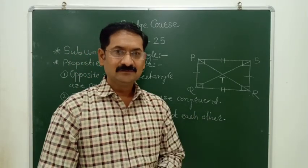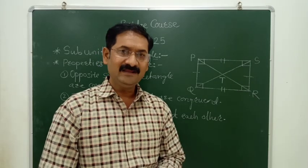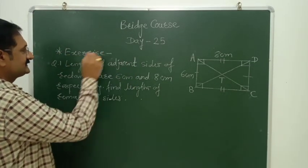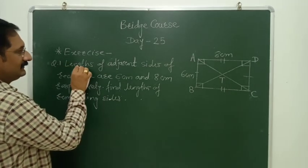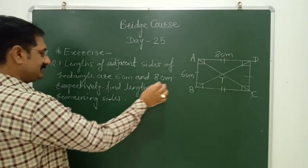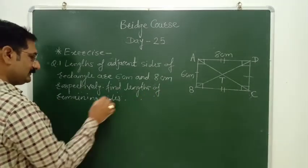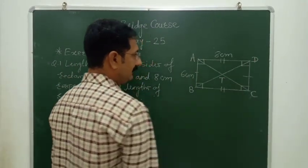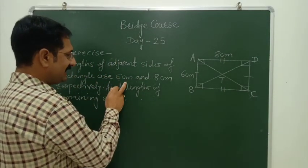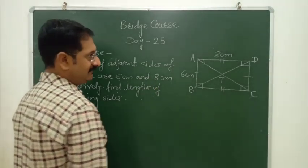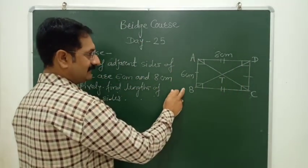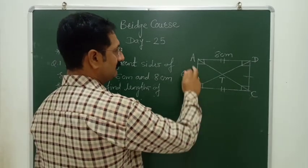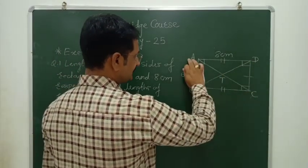So let's concentrate on the topic exercise of activity day 25. AB and AD are the adjacent sides of rectangle. One side is 6 cm, the other side is 8 cm. We have to concentrate on the remaining sides. So in the figure AB and AD are the adjacent sides of rectangle.